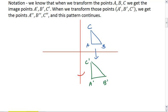We could then take this translation and reflect it. So we get A double prime, B double prime, and C double prime.